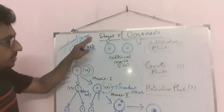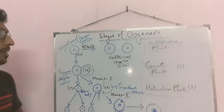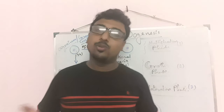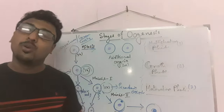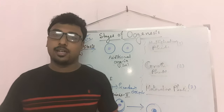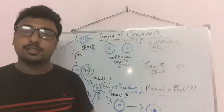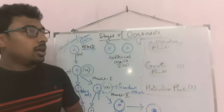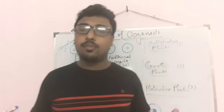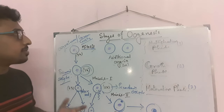The stages of oogenesis are very important. There are various questions from oogenesis, such as differentiating between spermatogenesis and oogenesis, or between spermatogonia and oogonia. For example, spermatogenesis takes place in the testes, but oogenesis takes place in the ovaries. In spermatogenesis, sperms are formed, but in oogenesis, eggs are formed.